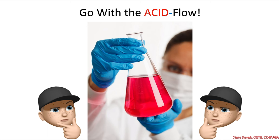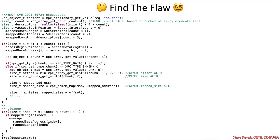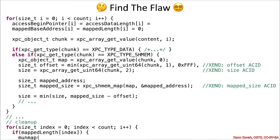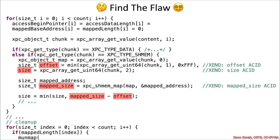As per usual, that should have been a simple matter of going with the acid flow. So zooming in on the code, we said that offset is acid, size is acid, and mapped size is acid. So there you go right there — that's some acid math. That's as bad as an acid bath.